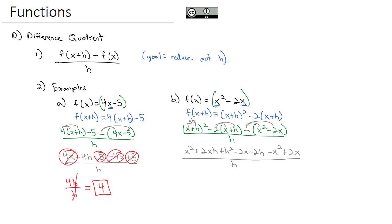Looking for like terms in the numerator, we've got an x squared and a negative x squared. Those go to 0. I've got a negative 2x and a positive 2x. Those go to 0. So what I'm left with is 2xh plus h squared minus 2h all over h.